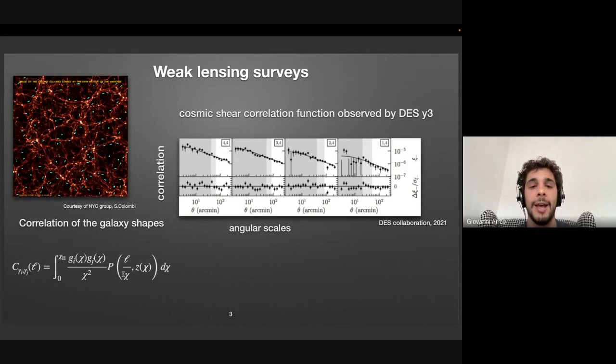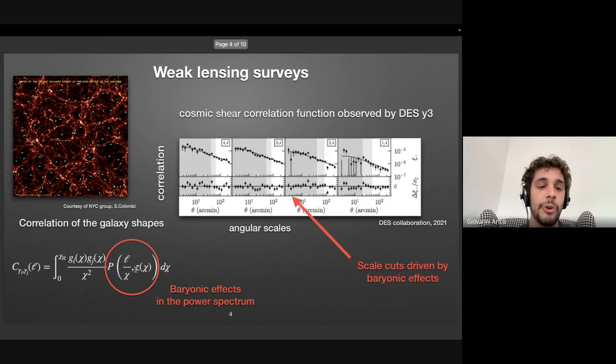For instance, the dark energy equation of state or the amplitude of fluctuations or the quantity and the density of matter in the universe. So this is a very important cosmological probe and the correlation of the shape of this galaxy, as we can see in this equation, is equal to the integral in the redshift or comoving distances of some kind of lensing kernel that is just a geometrical factor times the power spectrum of the matter.